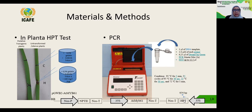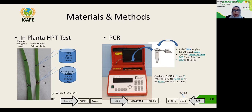For PCR analysis, we use the HPT gene as the target gene, using primers specific for the HPT gene. The reaction components have a total volume of 12.5 microliters. If the PCR runs well, a DNA amplification product of 974 base pairs in size will appear on the agarose gel.